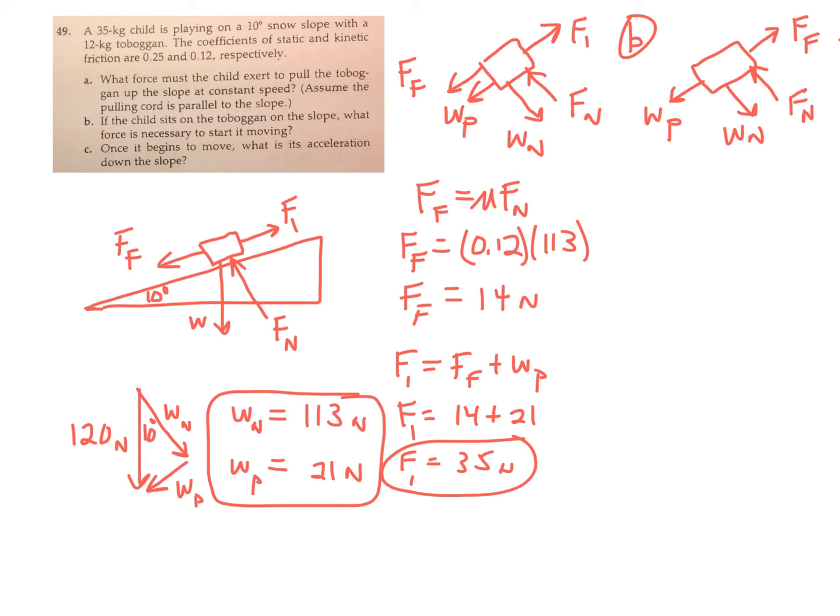You still have W sub N. You always have W sub N, W sub P, and F sub N. Those are always the same and always in those directions.